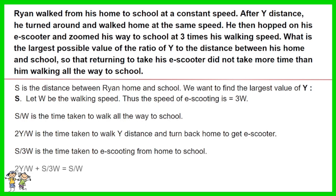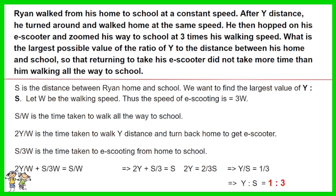As such, the time of walking all the way to school must be at least equal to the time of walking the distance y, then returning home, and then e-scooting to school. Working out the equation, you have y over s equals 1 over 3. Thus the ratio of y to s is 1 to 3.